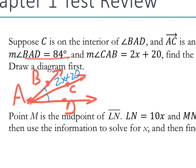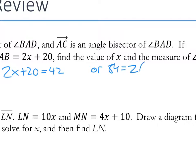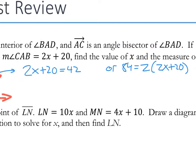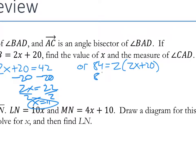Since this is an angle bisector, we know that CAB is half of BAD. So we can say 2x plus 20 equals 42, or we can say 84 equals 2 times the expression 2x plus 20. Two ways to go — you'll get the same answer either way. Subtract 20, x equals 22, divide by 2, and x is 11.